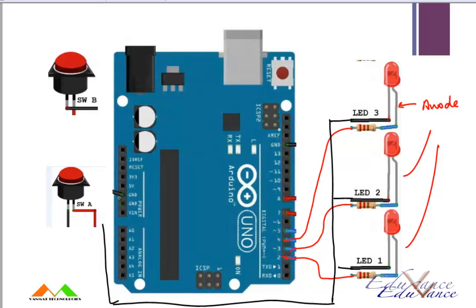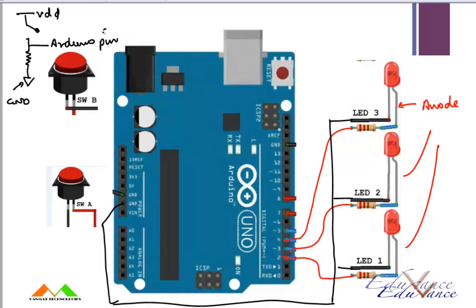That is your LED connection. The switch connection is a little more interesting. You have VDD, you connect the switch in such a way, and this is ground, and this is your Arduino pin. So when the switch is open the Arduino pin is connected to ground, and when the switch is closed the Arduino is connected to VDD.